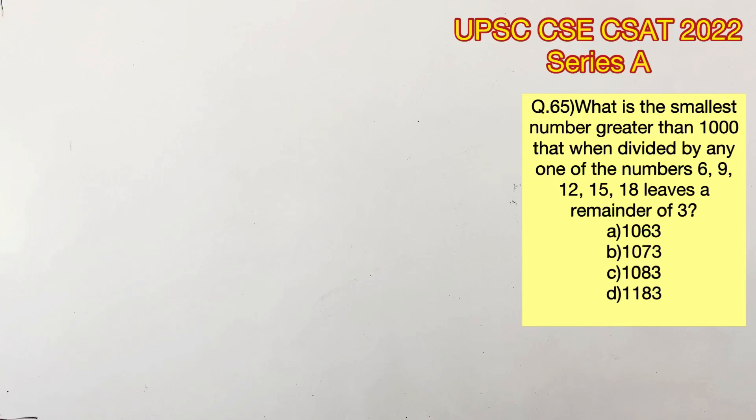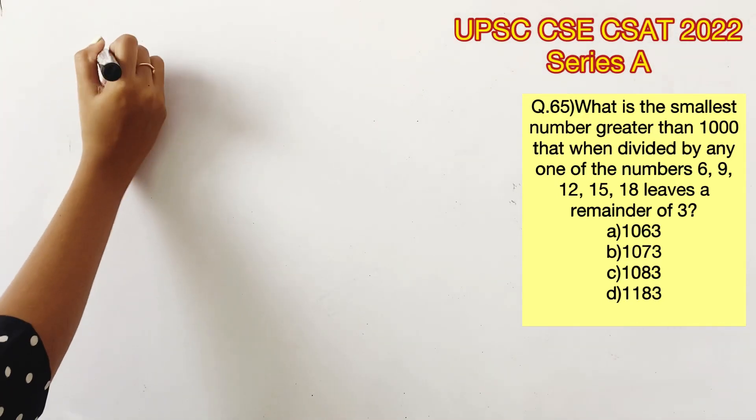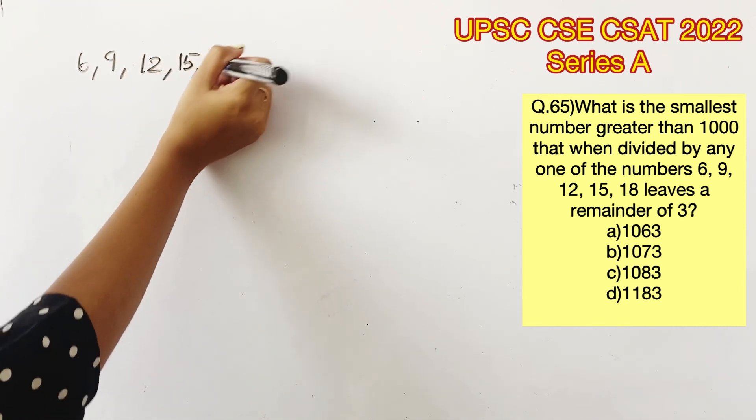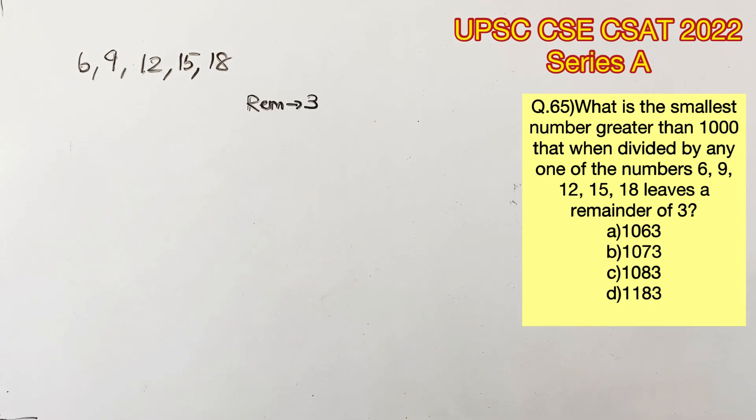Welcome to Aptitude Destination. Please pause the video and read the question completely. What is the smallest number greater than 1000 which, when divided by any of the numbers 6, 9, 12, 15, 18, leaves a remainder of 3?